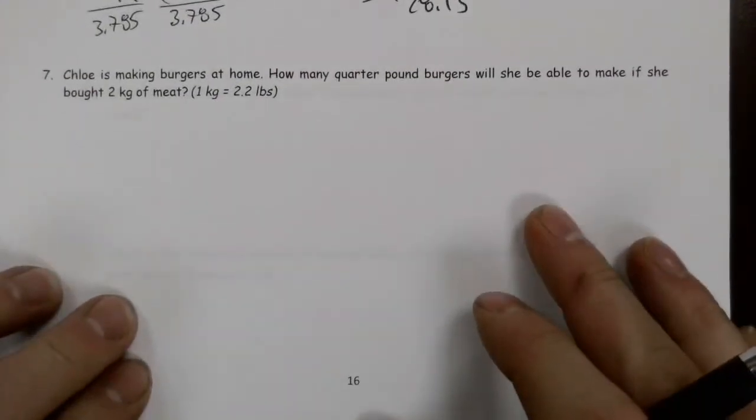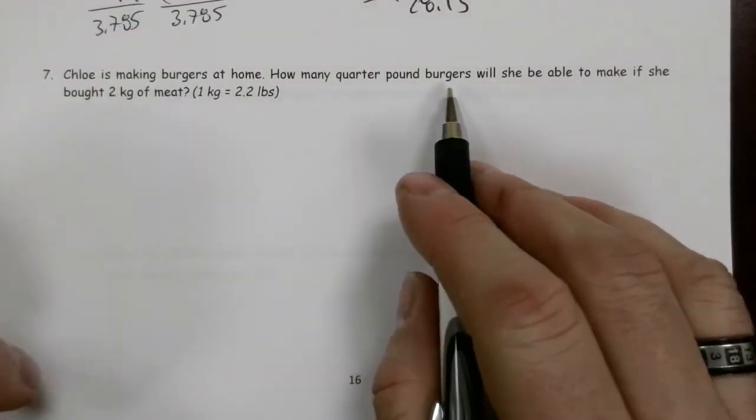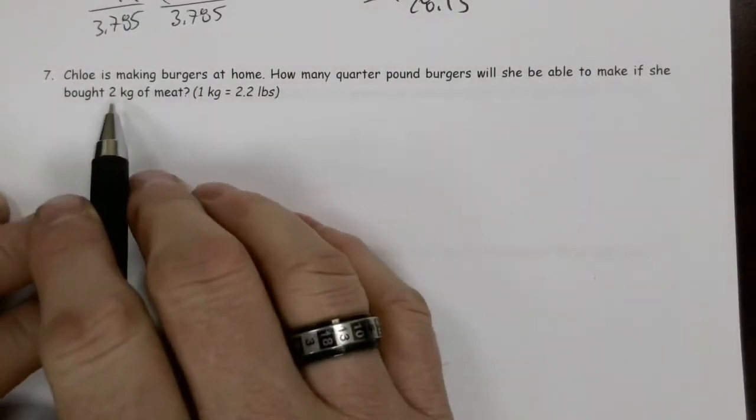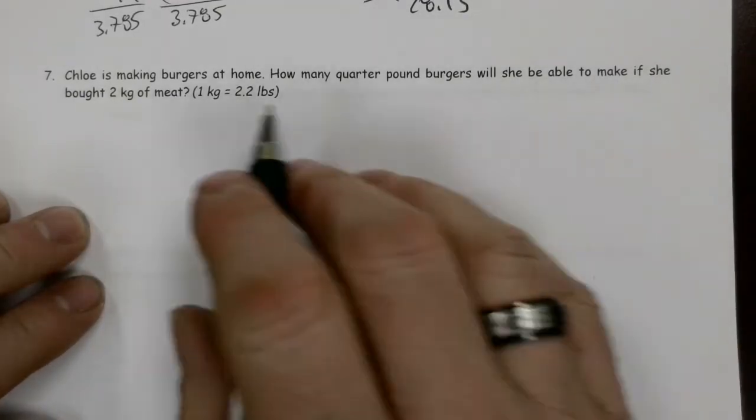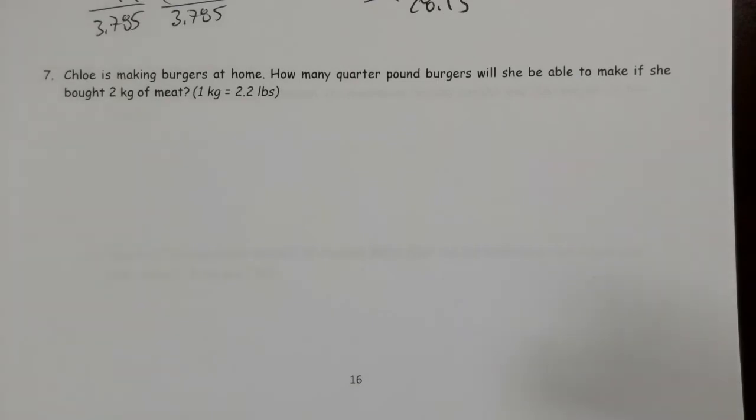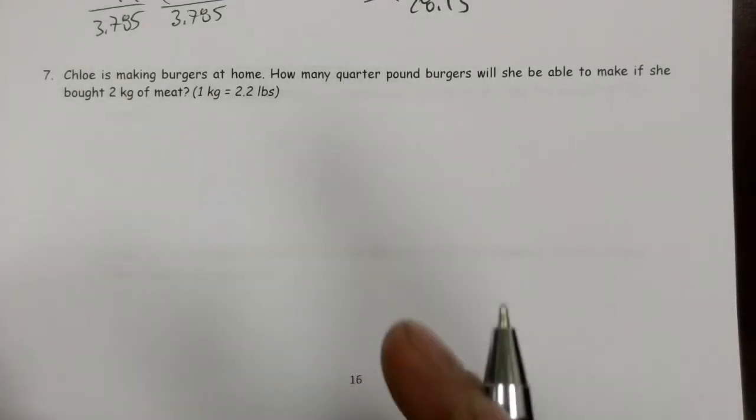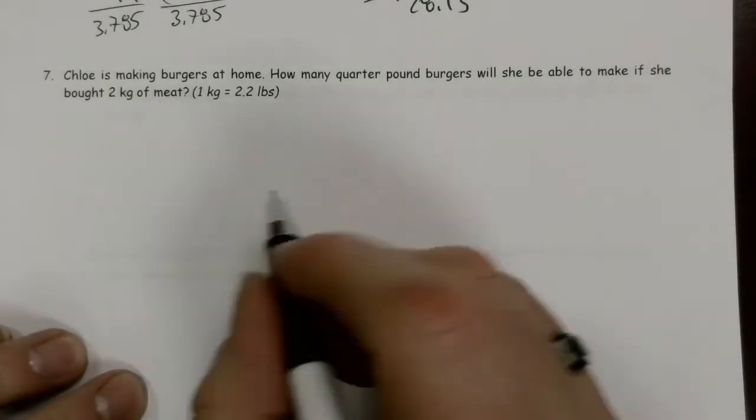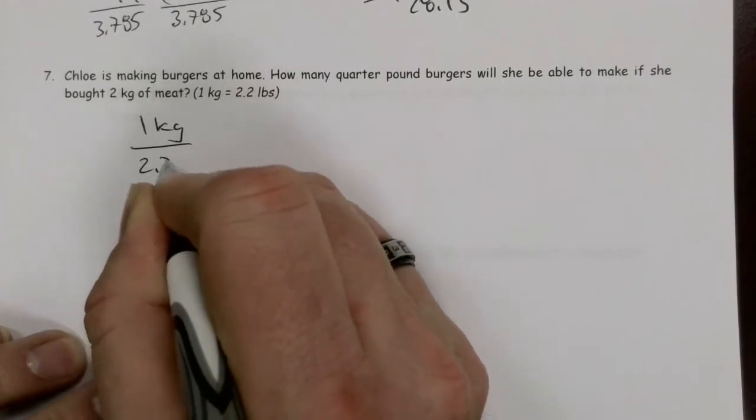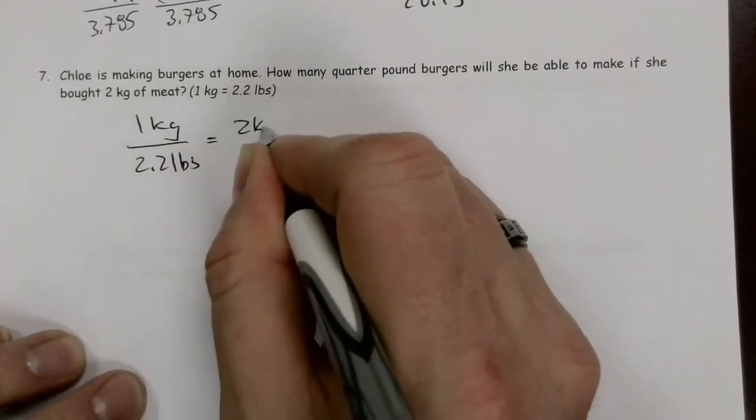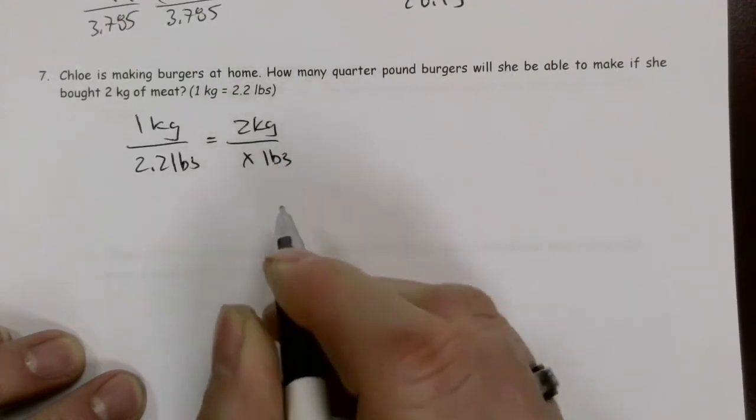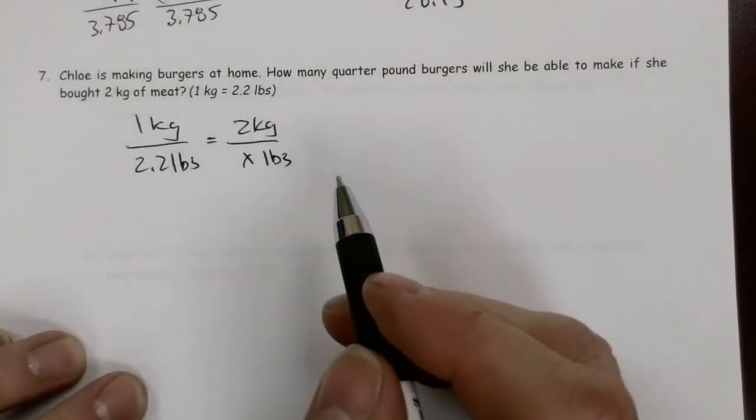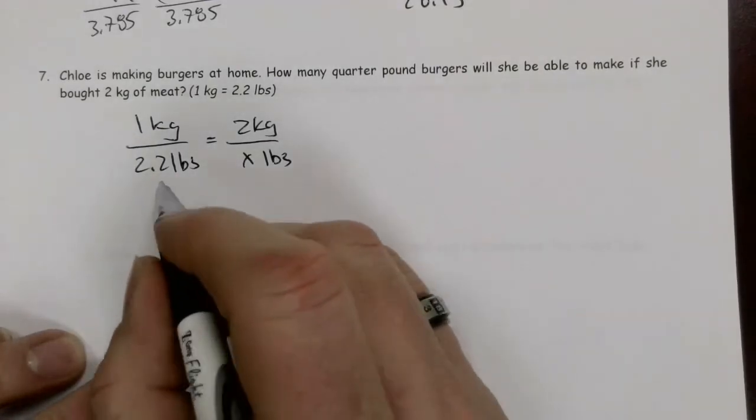One more. Chloe is making burgers at home. How many quarter-pound burgers will she be able to make if she bought two kilograms of meat? There's a couple calculations going on here. First, I've got to figure out how much meat she's got in terms of pounds. Then I've got to divide that by one quarter, because each burger is going to be a quarter of a pound. So here we go. One kilogram is 2.2 pounds. We've got two kilograms here. It's going to be x pounds. I love the fact that when I multiply across here, I'm going to get x times one. This becomes 2.2 times two. So x equals 4.4 pounds.